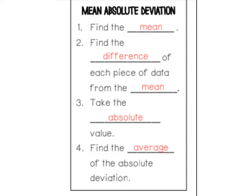So to calculate mean absolute deviation, you are going to find the mean — the average. You're going to find the difference of each piece of data from the mean. You're going to take the absolute value, and then you're going to find the average of those absolute deviations. It sounds like a lot of steps, but I'm going to walk you through an example in a second.